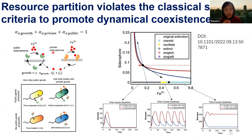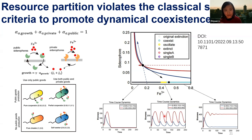We can write equations about how microbes produce siderophores, retrieve iron, and partition it into private and public siderophores. Once you have this simplest form of partition, you find that cheaters and cooperators — not full cooperators but partial cooperators — can coexist. Not only can they coexist stably, they can coexist in an oscillatory way.